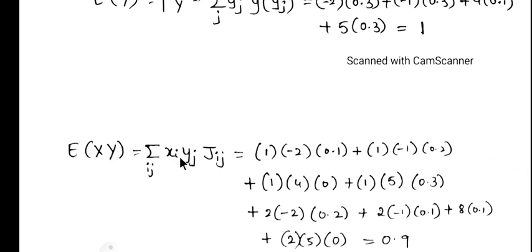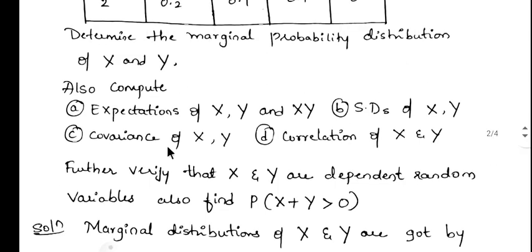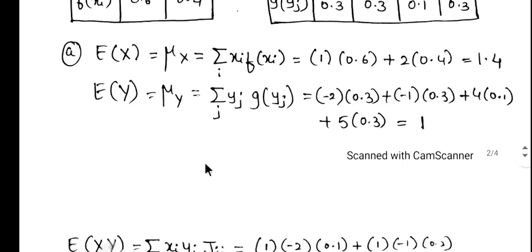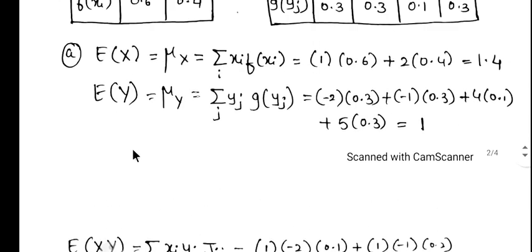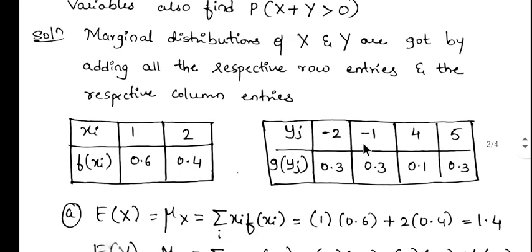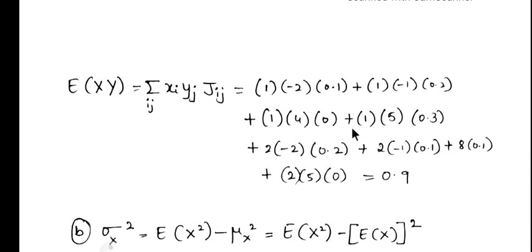Now we will calculate the expectation of x times y, which is given by summation over i and j of xi times yj times f(i,j). From the given table: (1)(minus 2)(0.1) + (1)(minus 1)(0.2) + (1)(4)(0.1) + (1)(5)(0.3), and similarly for the second row. After simplification you get the answer 0.9. This is E(xy).